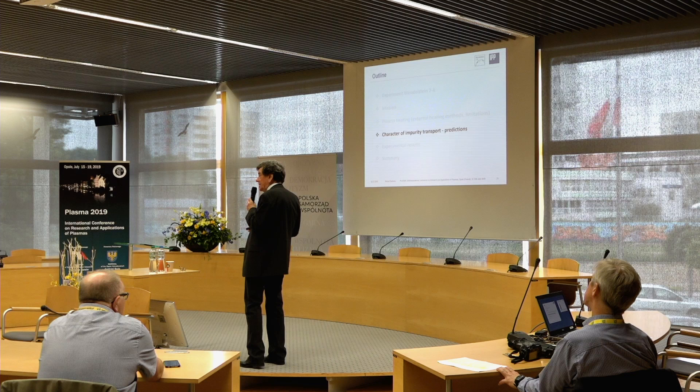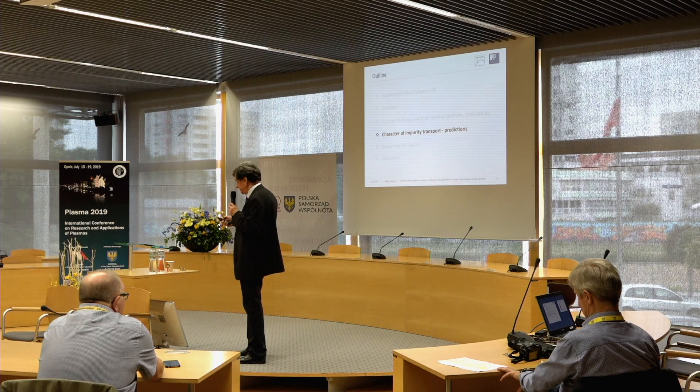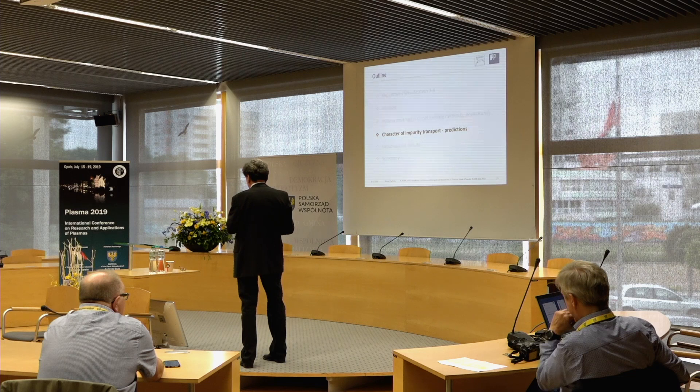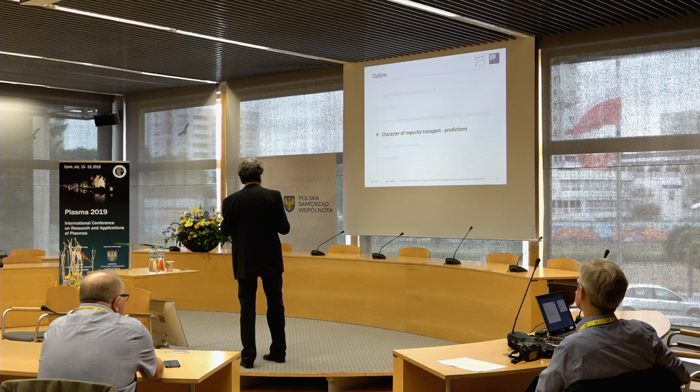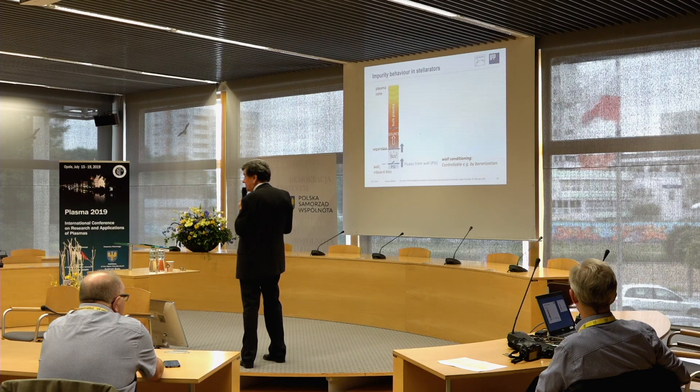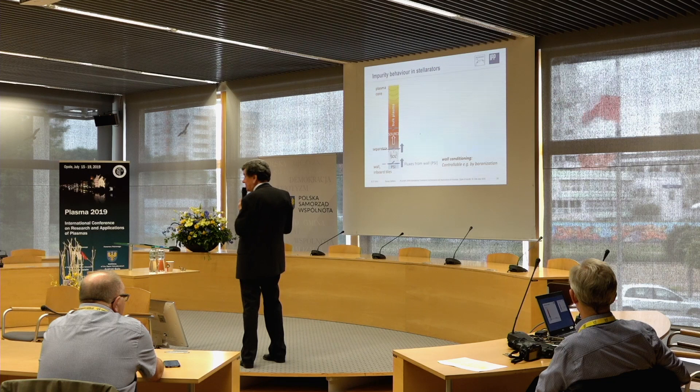Let's come to the core transport of impurities, which is very important especially for stellarators, where long confinement of impurities is predicted. In a cross-section of the plasma, impurities are produced by plasma-surface interaction at the vessel wall and enter the plasma. What we have to do is control the sources, which we can do very effectively by boronization — making a boron layer all over the wall to reduce the flux of many impurity species into the plasma.